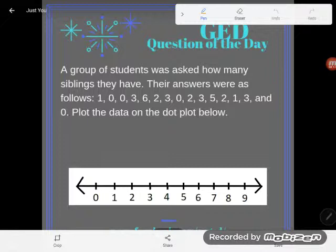have. Their answers were as follows: 1, 0, 0, 3, 6, 2, 3, 0, 2, 3, 5, 2, 1, 3, and 0. And then it says plot the data on the dot plot below. A dot plot, or a number...